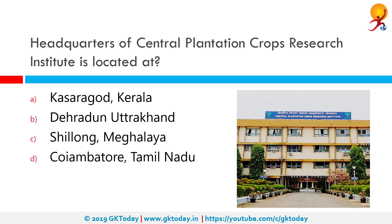The headquarters of the Central Plantation Crops Research Institute is located at Kasargod, Kerala. The Central Plantation Crops Research Institute, or CPCRI, was established in 1970 by the Indian Council of Agricultural Research, or ICAR, and has its headquarters in Kudlu, 5 km north of Kasargod.